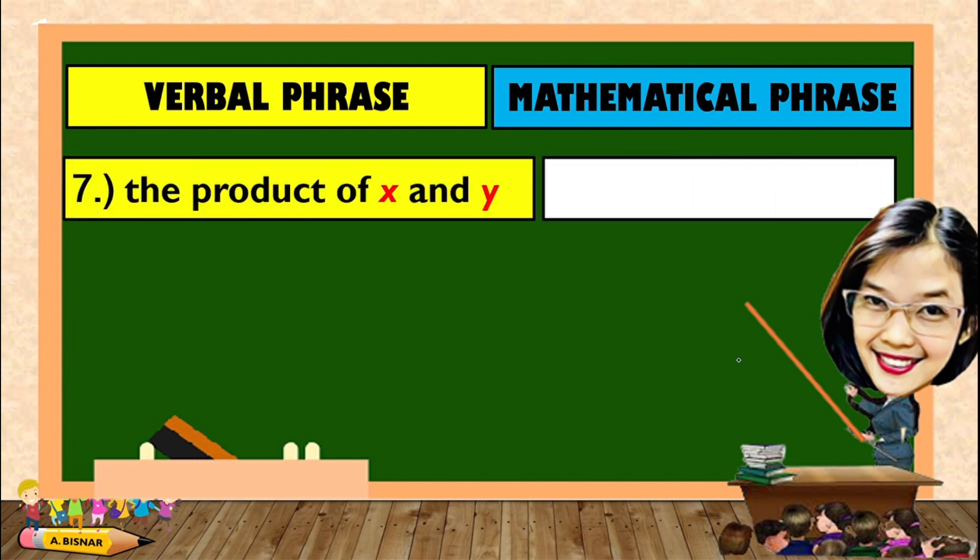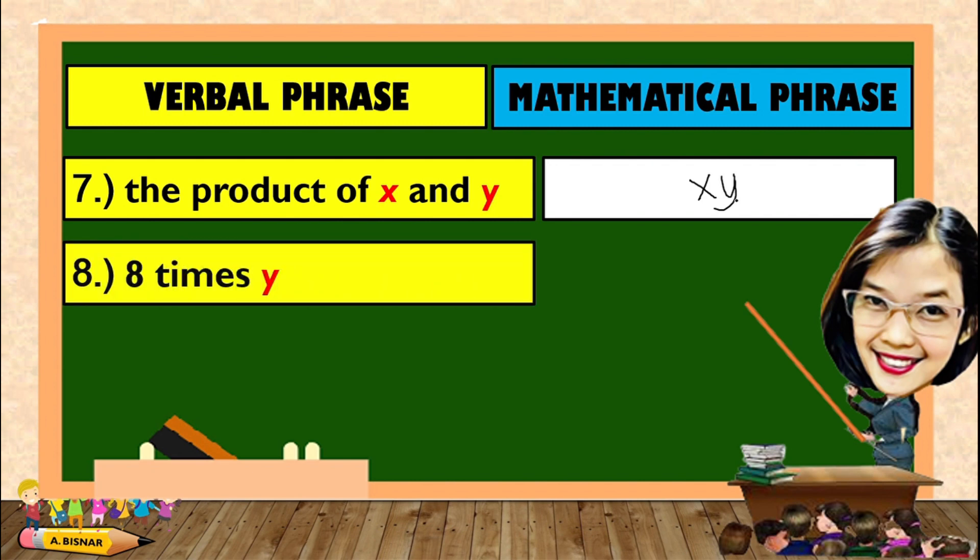For number 7, the product of X and Y. The product of X and Y is as simple as X times Y. Another, 8 times Y: 8Y.